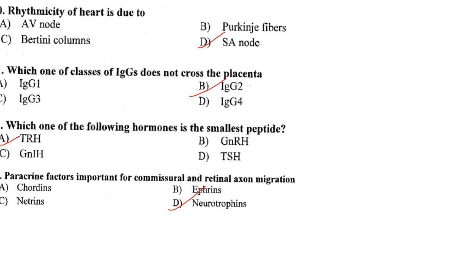Rhythmicity of the heart is due to the SA node. Cardiac rhythmicity is the spontaneous depolarization and repolarization event that occurs in a repetitive and stable manner within the cardiac muscle. Answer is option D.